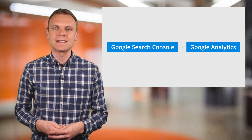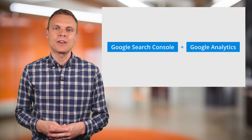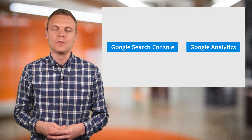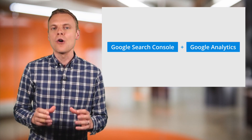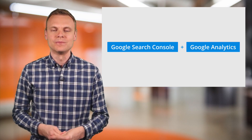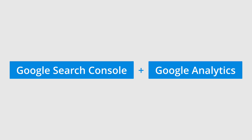Step number ten is to link Google Search Console and Google Analytics. If you haven't already, doing this lets you understand how your website performs in organic or free search results on Google. This means you can understand what people are searching for on Google to find your website, and which pages are being shown in search results. You can use the reports to optimize your content to increase your traffic from Google.